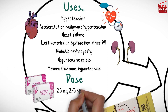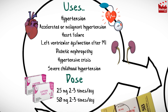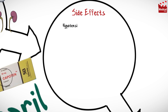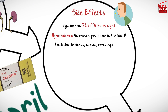The usual initial dose of captopril is 25 milligrams 2 to 3 times per day, which may be increased to 50 milligrams 2 to 3 times per day. Captopril may cause hypotension, dry cough at night, hyperkalemia, headache, dizziness, nausea, and renal impairment.